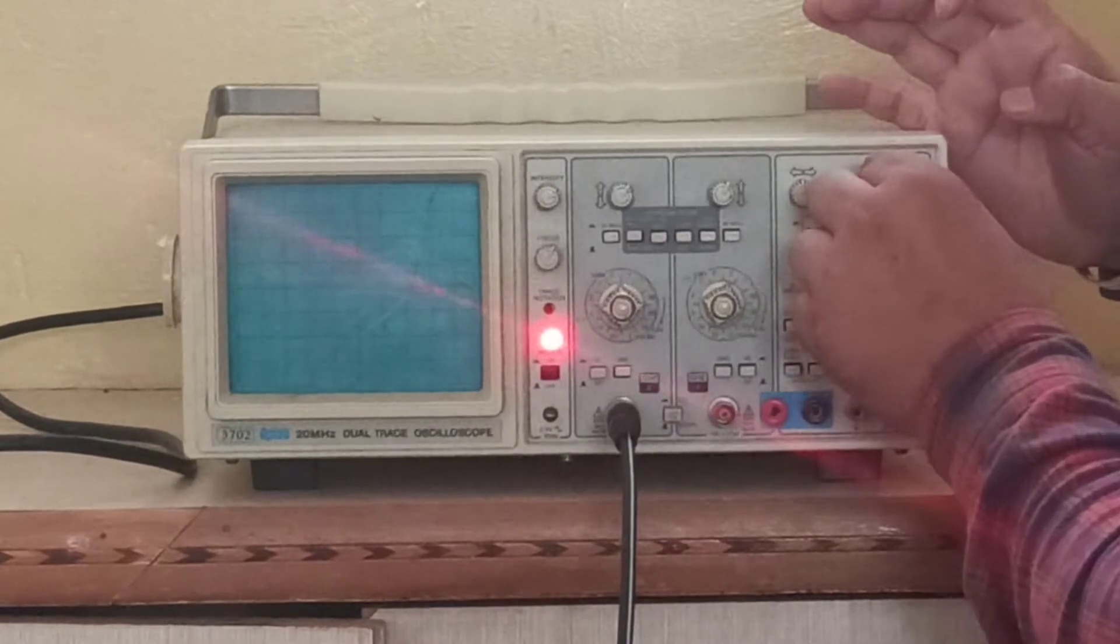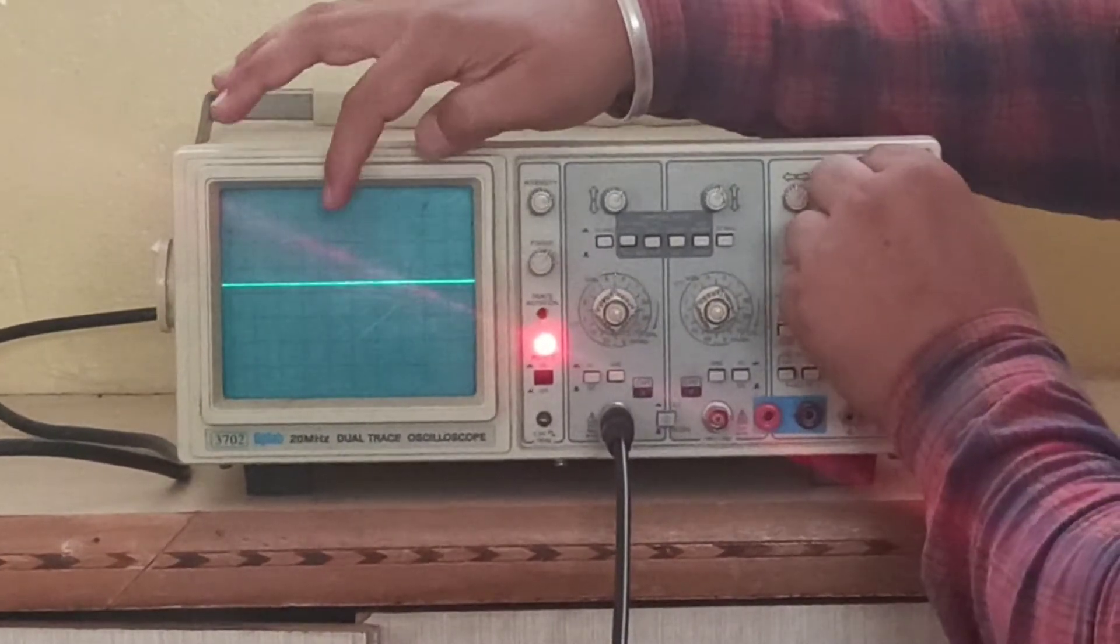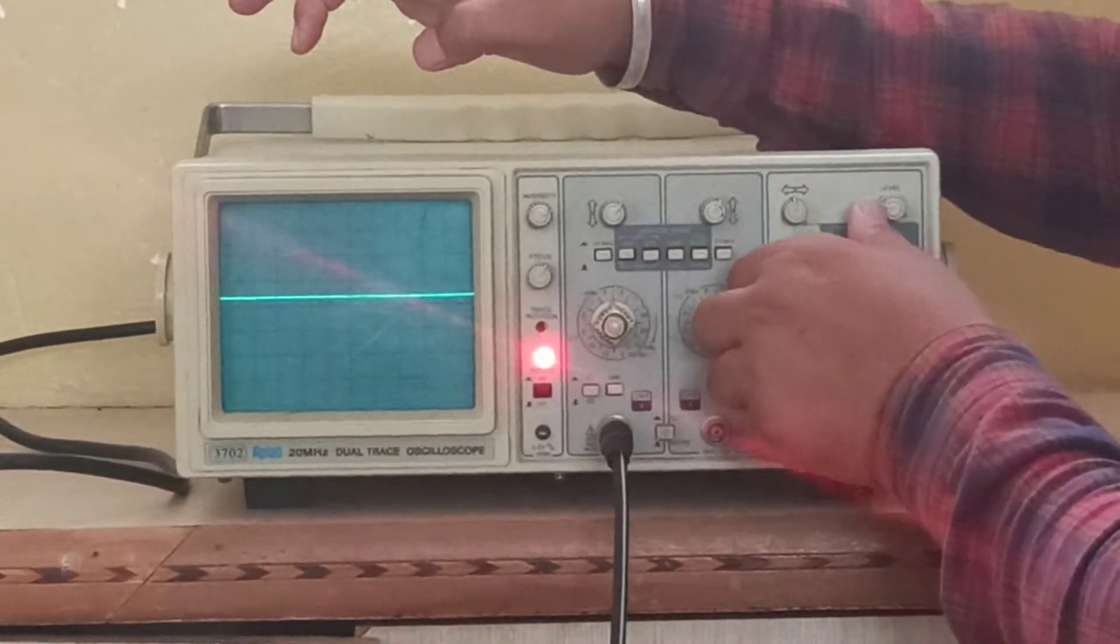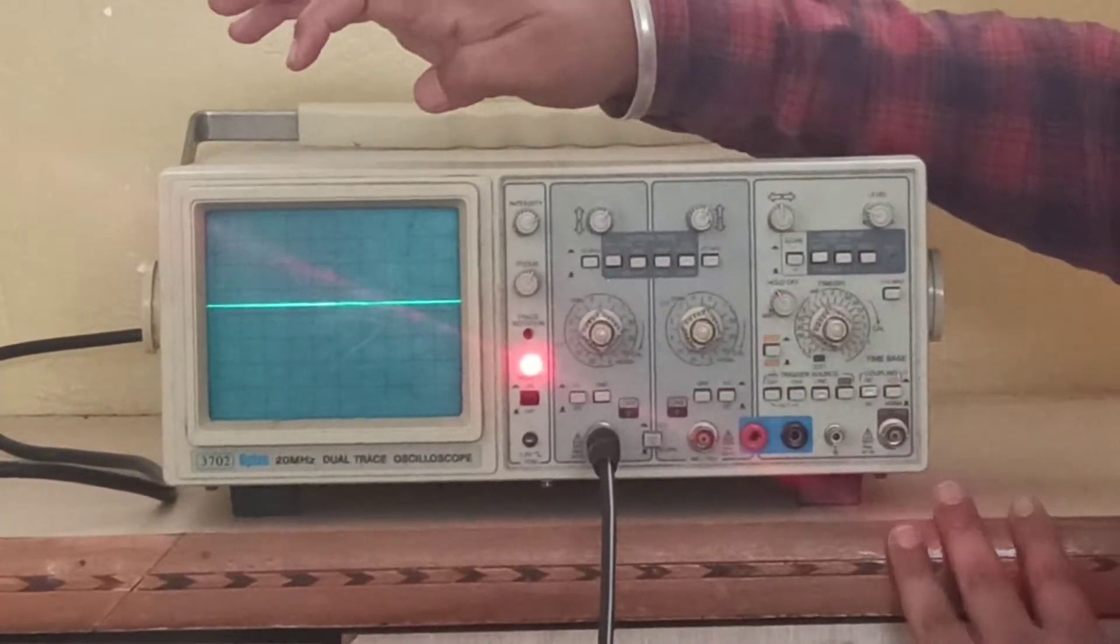Now, level control is used for the signal level. Next, hold off is not used much. This is auto mode. This section is not used.